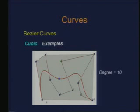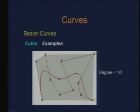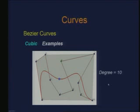There is a direct correlation between the number of control points of the Bezier polygon and the degree of the Bezier curve. For the cubic curve, there were 4 control points and the degree was 3. Similarly, with 11 control points numbered 0 through 10, the degree of the curve is 10. Degree and the number of control points are directly related.